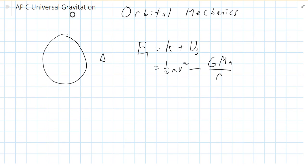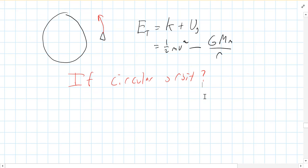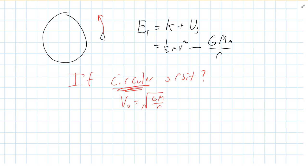Now, what if this thing is in a circular orbit? If something is going in a circle, then we know that its orbital velocity is the square root of G times mass of the planet over R. We derived that in an earlier video. That's the velocity of something going in a circular orbit. This only works for a circular orbit — if the thing is going in an ellipse or traveling in any other path, you cannot use this equation.